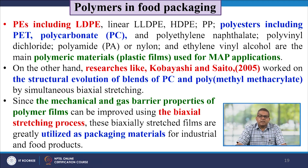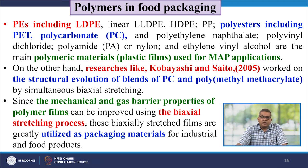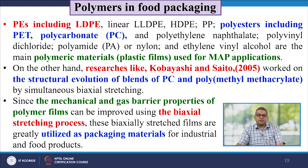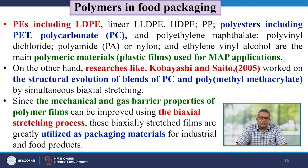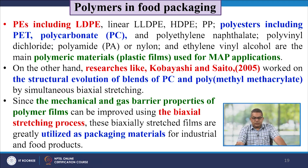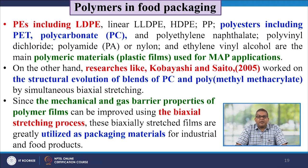Some researchers worked on the structural evolution of blends of polycarbonate and polymethyl methacrylate by simultaneous biaxial stretching. Since the mechanical and gas barrier properties of polymer films can be improved by using biaxial stretching processes, these biaxially stretched films are greatly utilized as packaging material for industrial and food products.